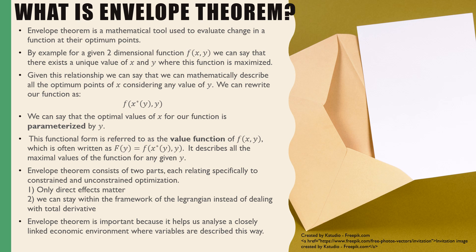Envelope theorem consists of two parts, each relating specifically to constrained and unconstrained optimization respectively. The first one is that we say that only direct effects matter.